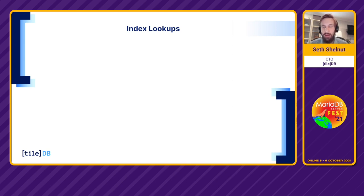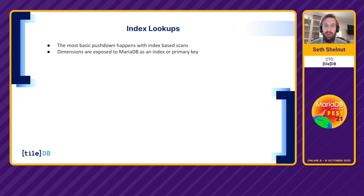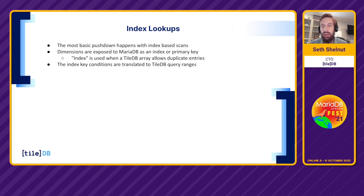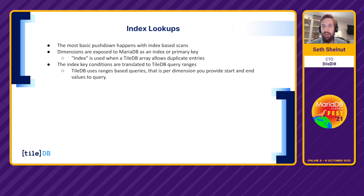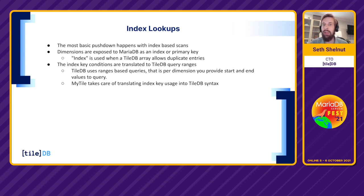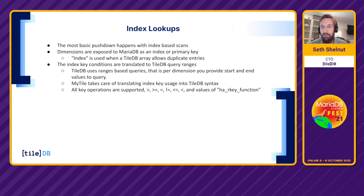The most basic pushdown is index scan. Dimensions in TileDB are exposed to MariaDB as either an index or a primary key — we use an index if it's a sparse array that allows duplicates, else a primary key. An index condition is translated into TileDB's range-based query syntax, which expects a start and end range for every dimension. We support every operation: greater than, less than, equal to, not equal to, and all permutations on the range key function — for strings, integers, and datetimes.